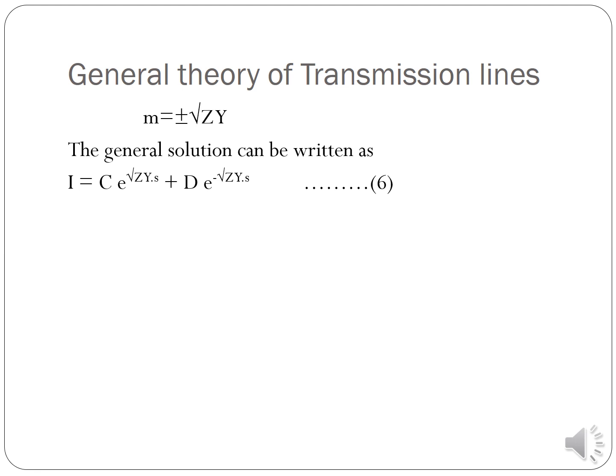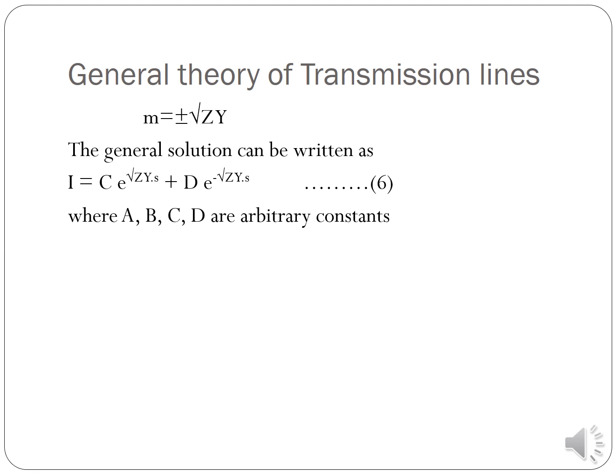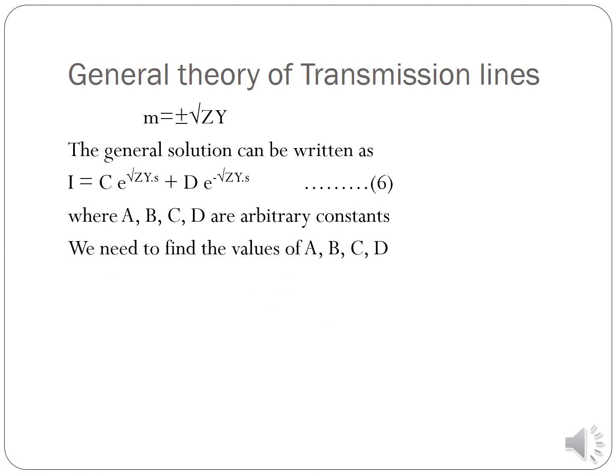The general solution for voltage is E = A·e^(√ZY·S) + B·e^(−√ZY·S), and the general solution for current is I = C·e^(√ZY·S) + D·e^(−√ZY·S), where A, B, C, D are arbitrary constants.